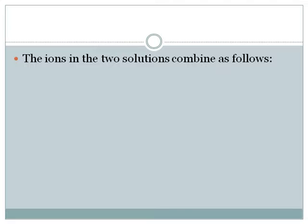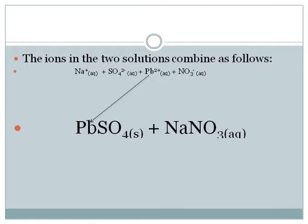The ions in the two solutions combine as follows. We have the sodium ion, the sulfate ion, the lead-2 ion, and the nitrate ion in solution. The lead ion combines with the sulfate ion to form lead-2 sulfate, which is the white precipitate, and the sodium ion combines with the nitrate ion to form sodium nitrate, which is a colorless solution.